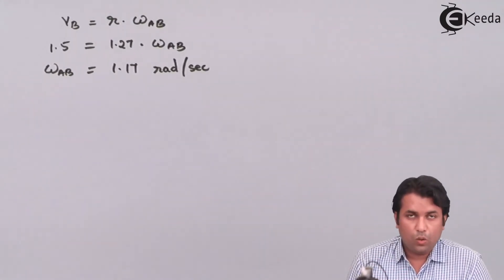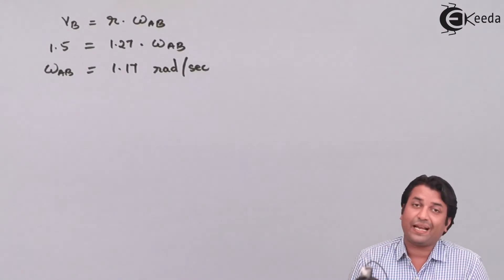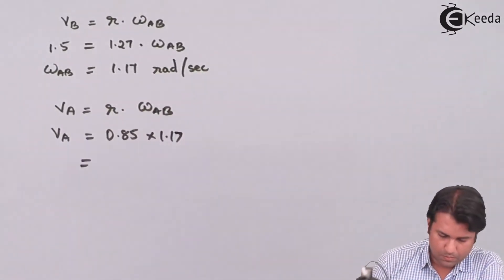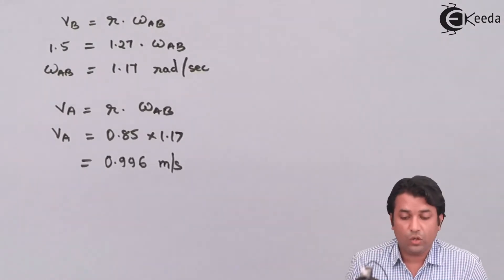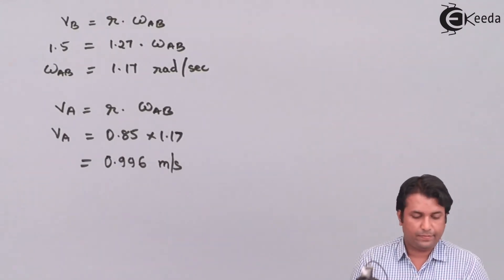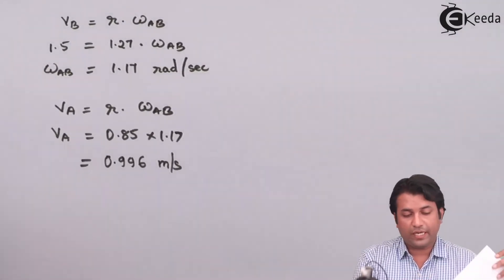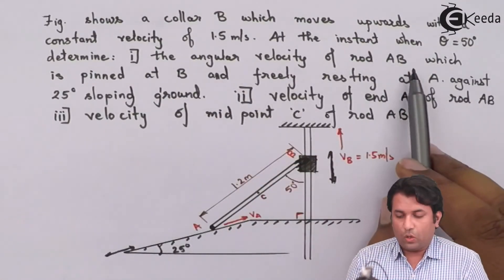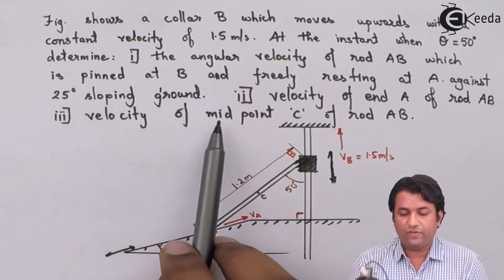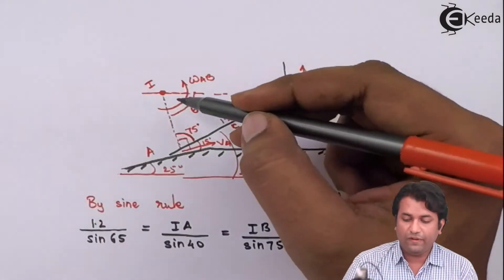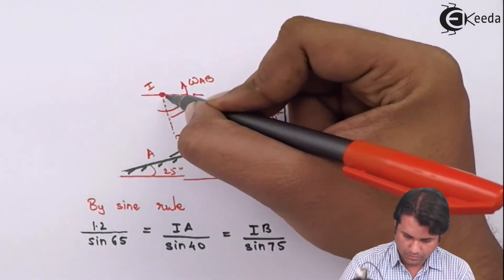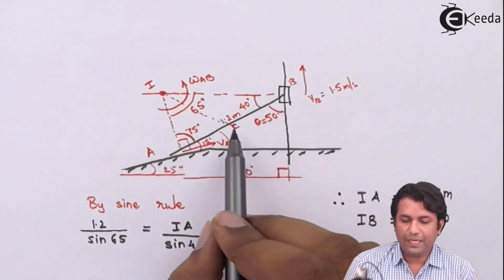Using the same omega — the angular velocity of AB at 1.17 rad/s — and the same relation v equals r times omega with length IA, the velocity at point A comes out as 0.966 meters per second. That satisfies the required parts for angular velocity of rod AB and velocity of end A. Now I need to find the velocity of the midpoint, point C, of rod AB. To do that, I need to find the distance IC.